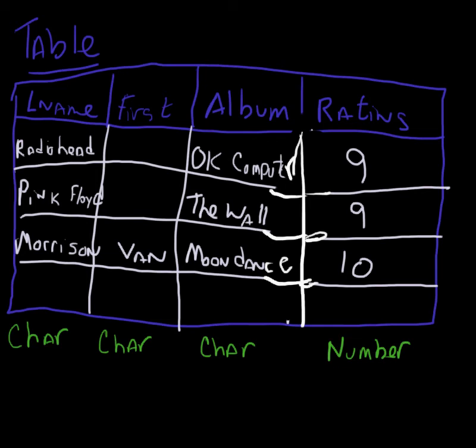In our previous video, we took a look at how to create a table inside of an Oracle database to store some information. In this video, we're going to take a look at something called a constraint, which allows you to define at the table level ways of limiting the information that will be accepted inside of your table.